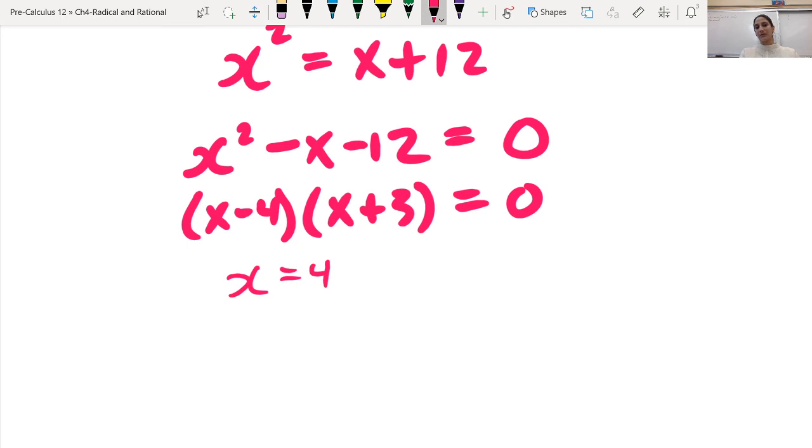And from this, I can tell that my solution must be x equals 4. So if I plug in 4, then this would be 0, and the other thing would be 0. Or from this one, it would be x equals negative 3.